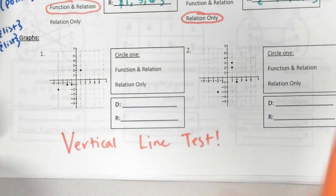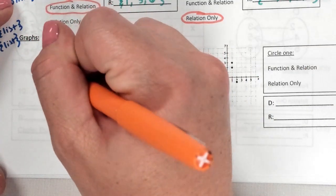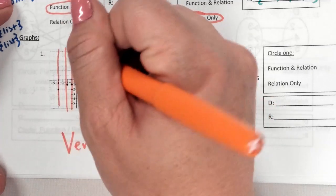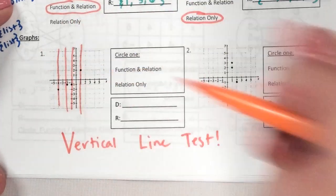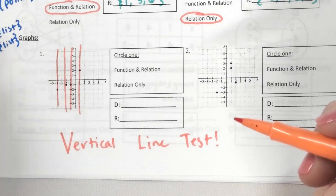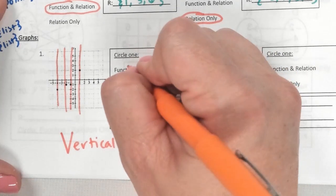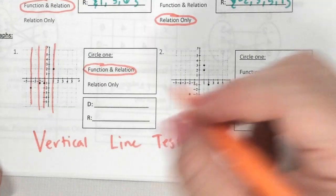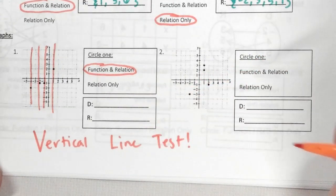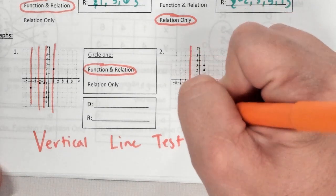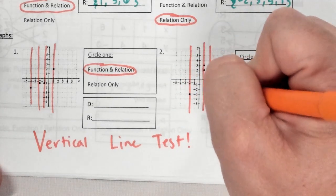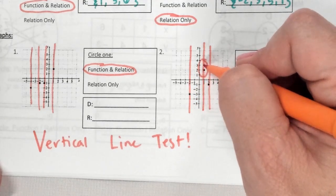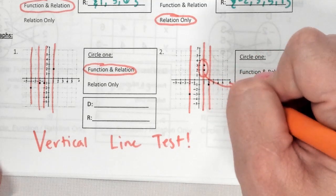I'm going to show how the vertical line test works. If I draw a vertical line everywhere I have a dot, did it ever touch a dot more than once? Each line only has one dot — that means this is a function. However, on number two, if I draw a vertical line you can see it touched two dots. That's because X repeated — so that means this is a relation only.